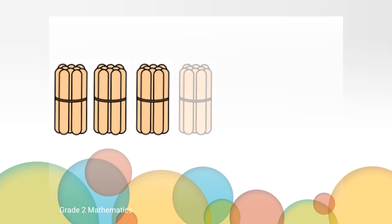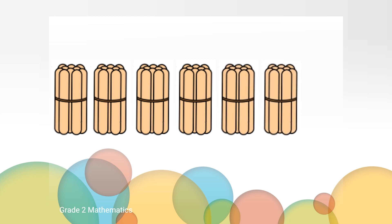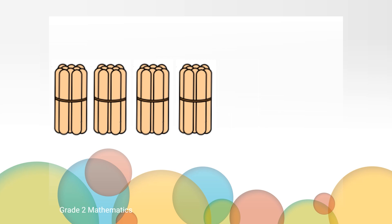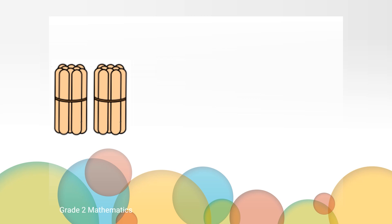Count with me as you see the bundles come onto the screen: 10, 20, 30, 40, 50, 60, 70. Now we will count backwards. Count with me as the bundles disappear: 70, 60, 50, 40, 30, 20, 10, 0.